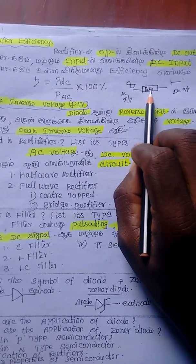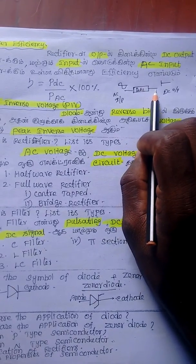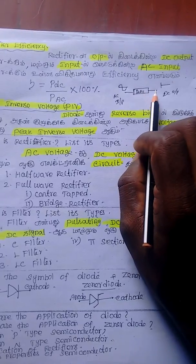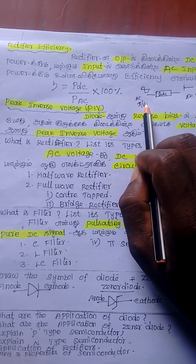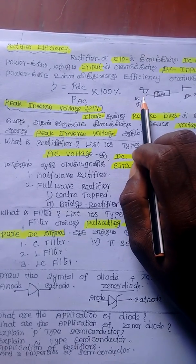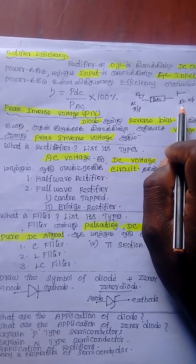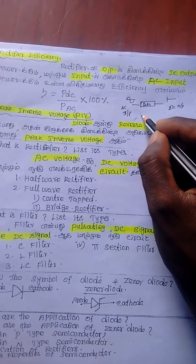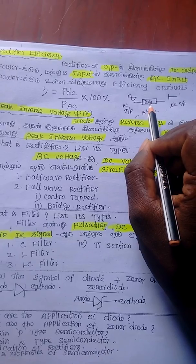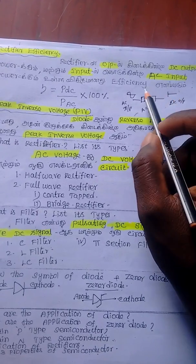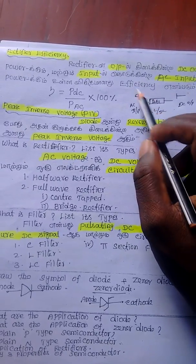Let's look at the rectifier. The output is the DC output, and the input is the AC input. So we have AC input going in and DC output coming out — that is the rectifier.